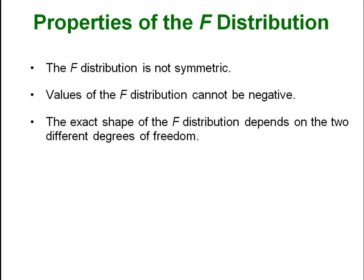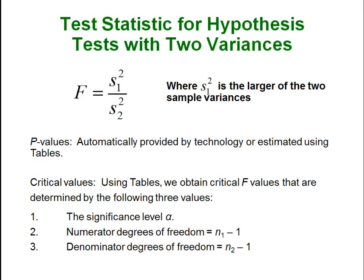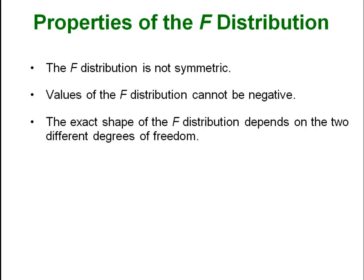Properties of the F distribution: it is similar to the chi-squared distribution in that it is not symmetric and all values are zero and above. You cannot get negative values from the F distribution. That makes sense because you are squaring two numbers — s₁-squared and s₂-squared — which are automatically positive, and then taking the ratio of two positive numbers. So you always get a positive number greater than zero. The exact shape of the distribution always depends on the two degrees of freedom, similar to both the t and chi-square distributions.